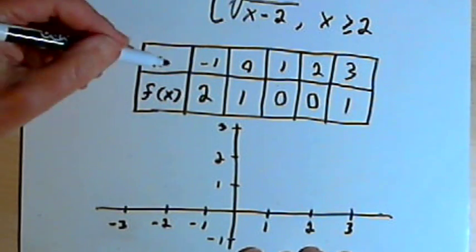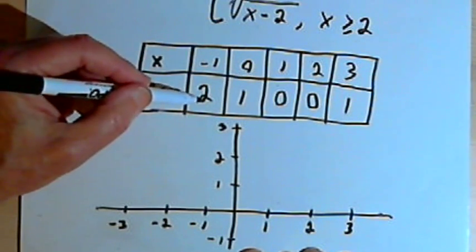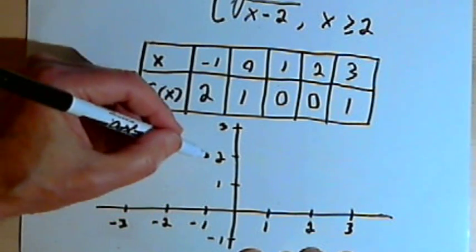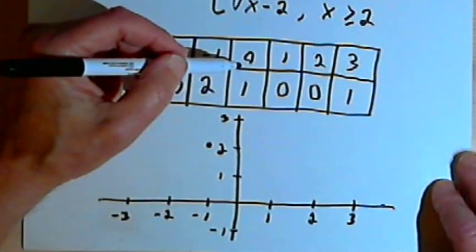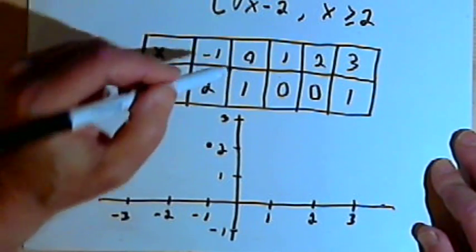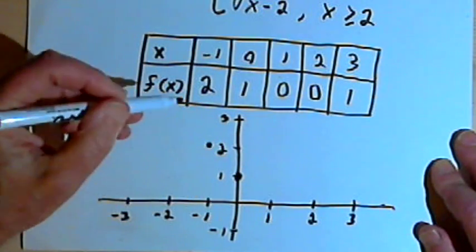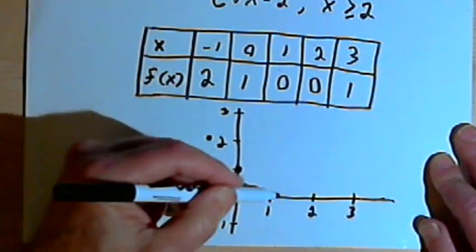I'm going to have a point where x is negative 1 and f of x, or y, is 2. So that's negative 1, 2. Negative 1, 2 will be here. Then I'll have another point at 0, 1. That's on the y-axis. I'll have a point at 1, 0. That's on the x-axis.